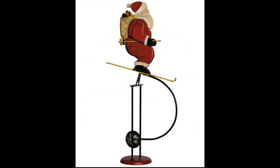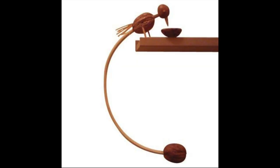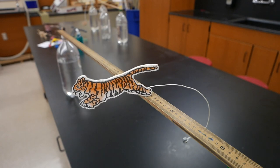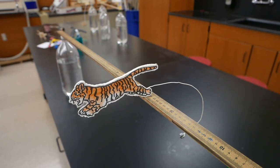You can find all sorts of examples of balancing toys online, and simpler versions are very easy to make. This tiger would be a good example. It was made with foam board, paper, wire, and a steel nut for added weight.